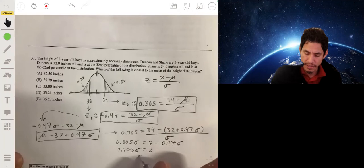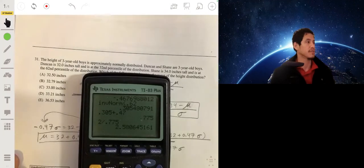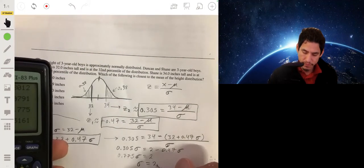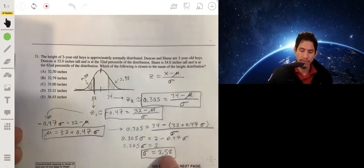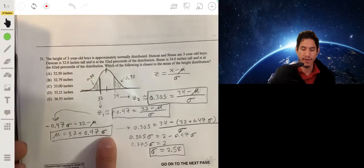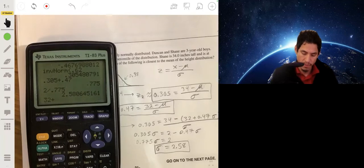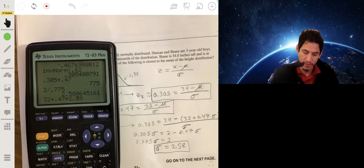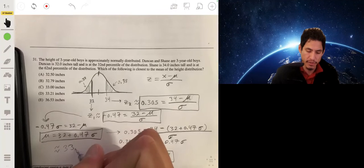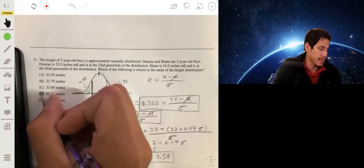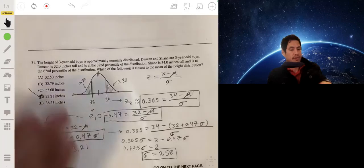And sigma will then be 2 divided by 0.775 and will be about 2.58. So now that we have sigma, we can find mu by plugging 2.58 into here. So we'll get that mu is 32 plus 0.47 times 2.58. It'll be about 33.21, and so the answer will be D. And that one requires some work.